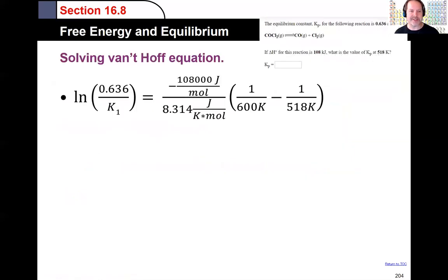So I plugged in the 0.636 for K2. It doesn't matter which one you used it for. I used it for K2. You could have used it for K1. Just be consistent. So on K2, I put 0.636. And for temperature 2, I put the 600 Kelvin. Temperature 1, 518. And then my K1 I'm going to solve for. Substitute in the enthalpy at 108,000 joules. Make sure we're in the same units. And then don't forget your negative sign. And then here's the number in units for the R constant.